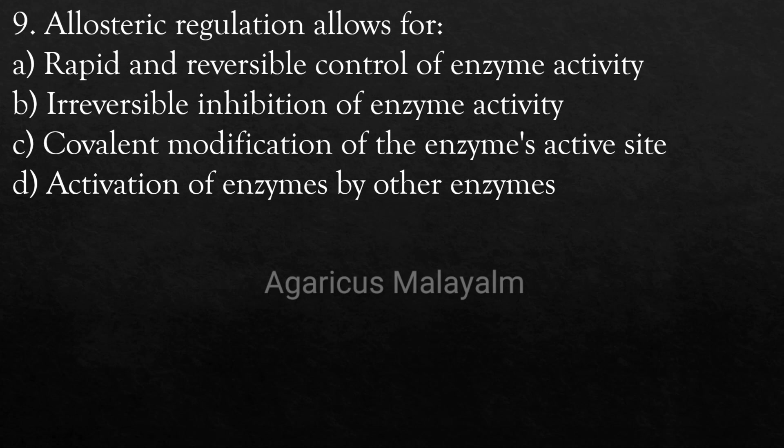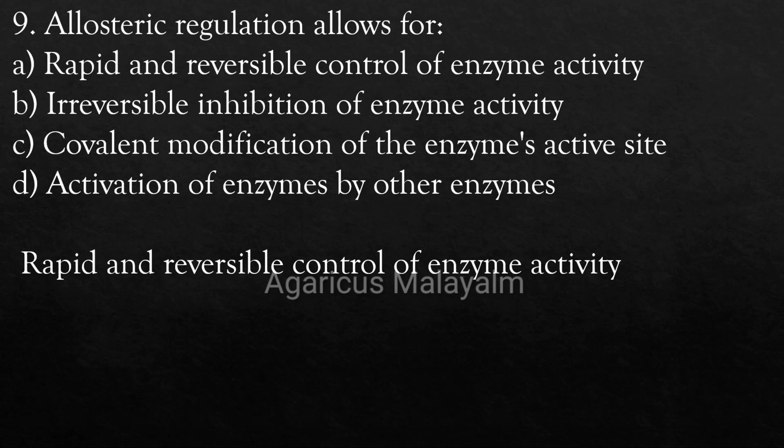Ninth Question: Allosteric regulation allows for? Option A: Rapid and reversible control of enzyme activity. Option B: Irreversible inhibition of enzyme activity. Option C: Covalent modification of the enzyme's active site. Option D: Activation of enzymes by other enzymes. Correct Answer: Option A — Rapid and reversible control of enzyme activity.